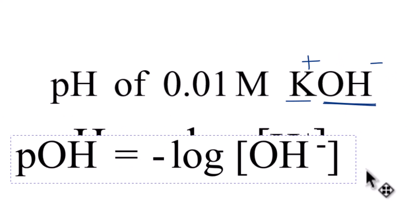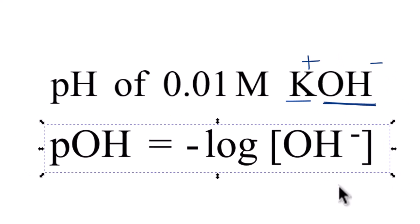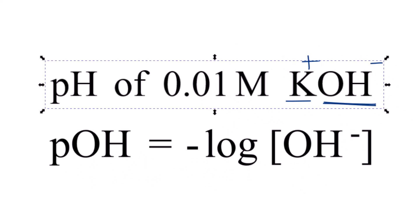So you need to use this formula here to find the pH of this 0.1 molar solution of KOH. We have pOH equals the negative log of the hydroxide concentration, which is 0.01.